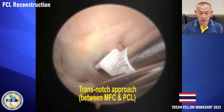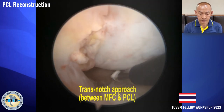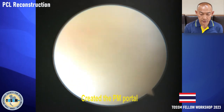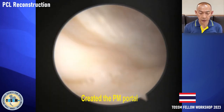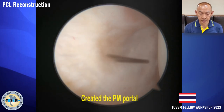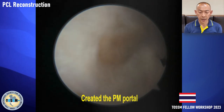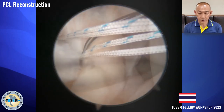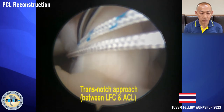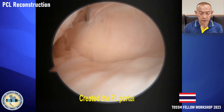We passed the scope between the PCL and the medial femoral condyle into the posteromedial compartment. We then created the posteromedial portal using a wire and knife. We also passed the scope between the ACL and the lateral femoral condyle into the posteromedial compartment, and the posteromedial portal was created using the wire and knife.